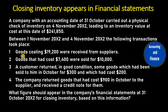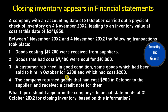1. Goods costing $19,200 were received from suppliers. 2. Goods that had cost $7,400 were sold for $10,000. 3. A customer returned, in good condition, some goods which had been sold to him in October for $300 and which had cost $200.